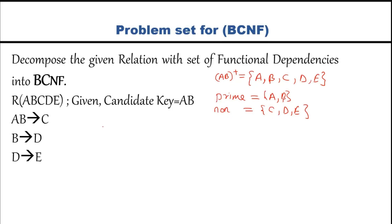First, AB is determining C. AB is the complete candidate key, so this cannot be a partial dependency or transitive dependency — not a problem. However, B alone is part of the candidate key and B determines D, which is a non-prime attribute. This is a partial dependency, so the given relation is in 1NF but not in 2NF.